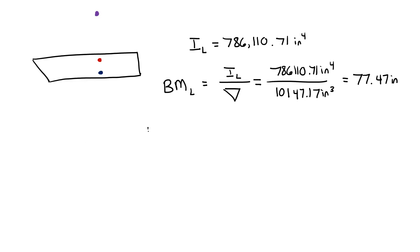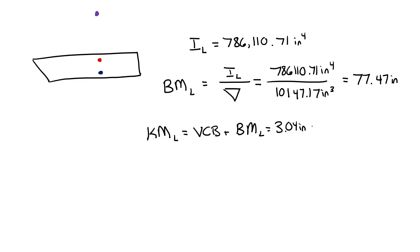To find the height of my metacenter in the longitudinal direction, I just need to add my vertical center of buoyancy plus my metacentric radius. My vertical center of buoyancy, just like in the transverse direction, was 3.04 inches, and therefore my metacenter is sitting 80.51 inches above my baseline.